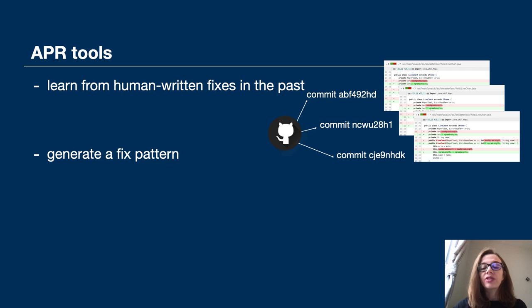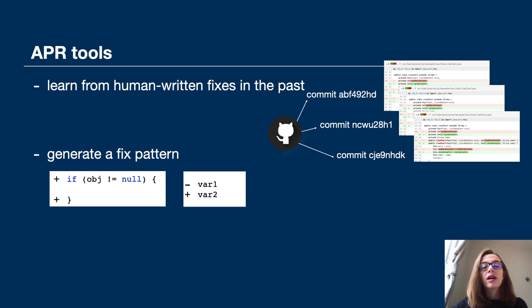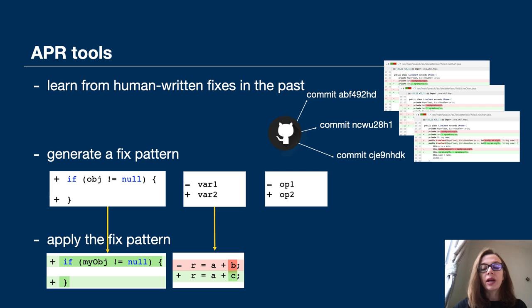APR tools generate fix patterns out of similar fixes. Common fix patterns are a null pointer checker, a replacement of a variable, a replacement of an operator, etc. Finally, when a bug is detected, an APR tool chooses a suitable fix pattern and applies it to the buggy code. The more fix patterns we have, the greater range of bugs can be fixed automatically.